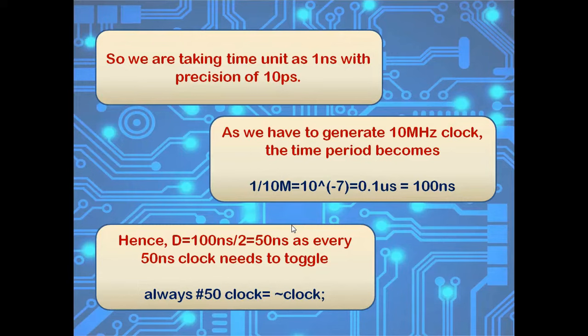So, our Verilog code becomes always #50 clock = ~clock. The time unit is nanosecond. So, #50 shows 50 nanoseconds.